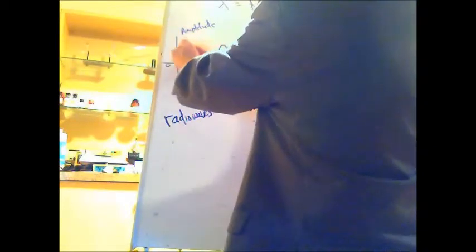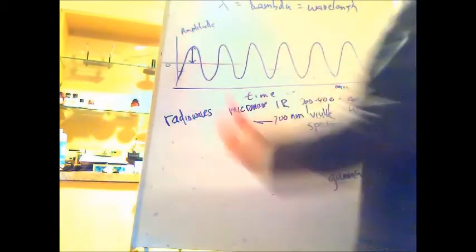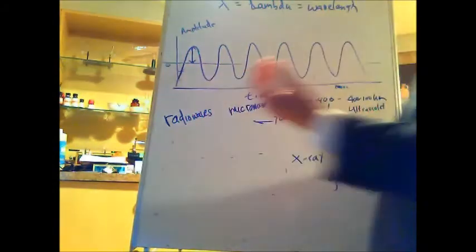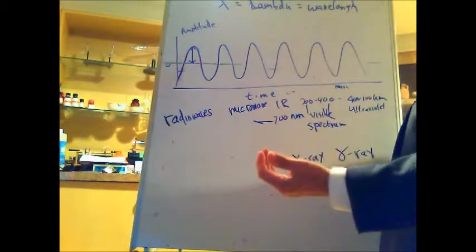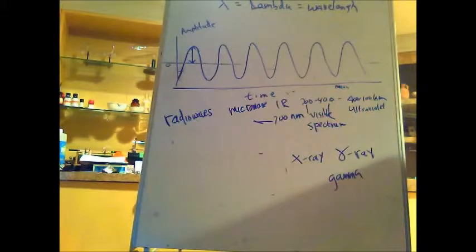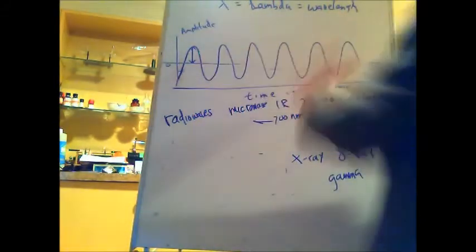Sound waves, which are longitudinal waves, involve compression and rarefaction — molecules of gas being pushed together and then pulling apart in another region. That's how sound propagates; it has to go through a medium, whether gas, liquid, or solid. But electromagnetic radiation, fortunately for us, does not need a medium. If it did, life would never have been able to exist on this planet, because we could never get the heat and light from the sun traveling through the vast emptiness of space between the sun and the earth.